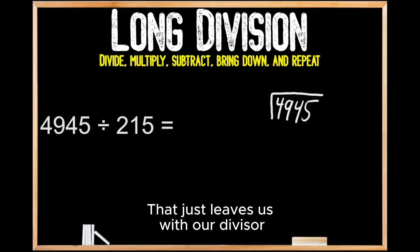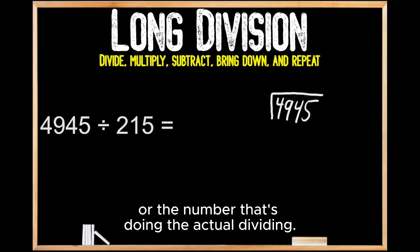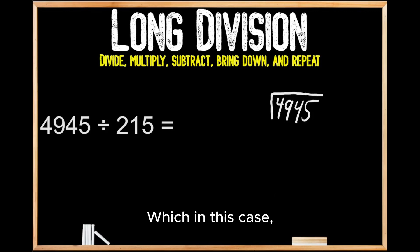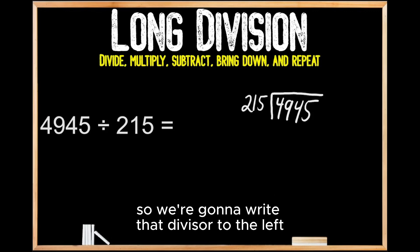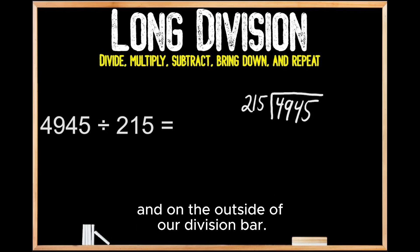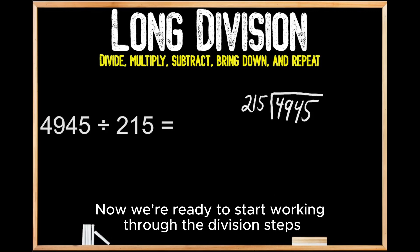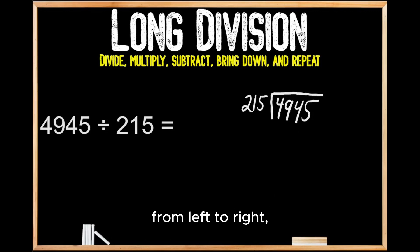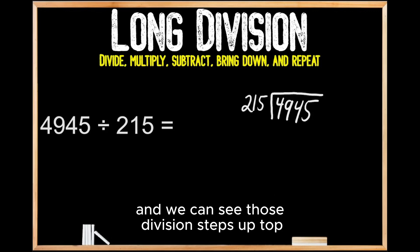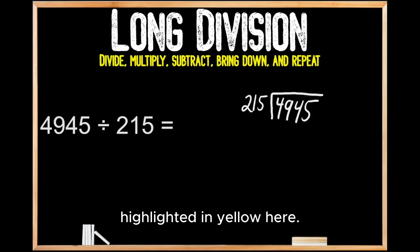That just leaves us with our divisor, or the number that's doing the actual dividing, which in this case is 215, so we're going to write that divisor to the left and on the outside of our division bar. Now we're ready to start working through the division steps from left to right, and we can see those division steps up top highlighted in yellow.